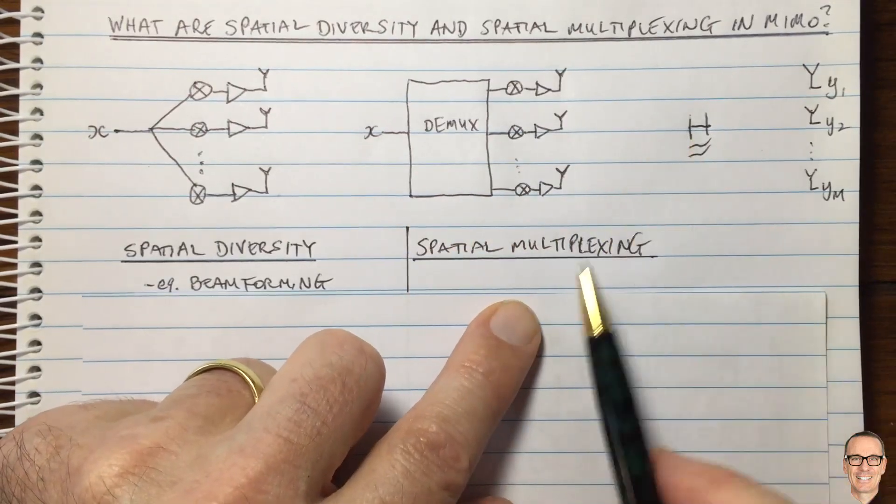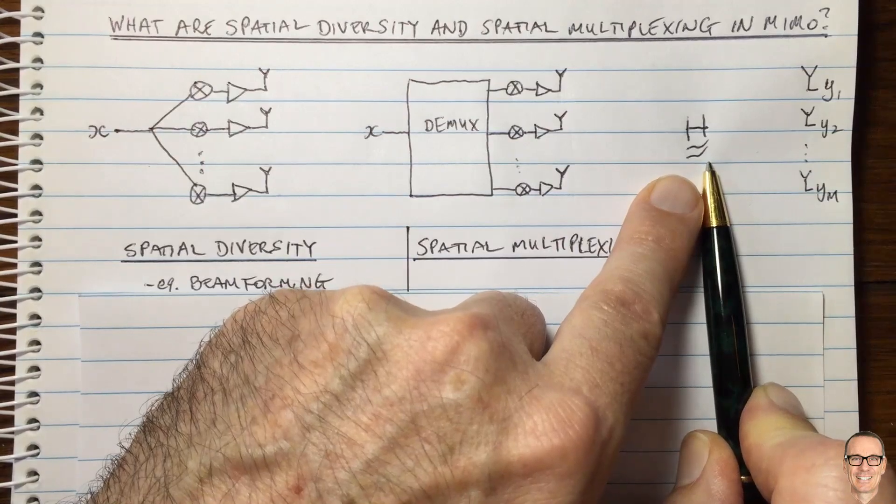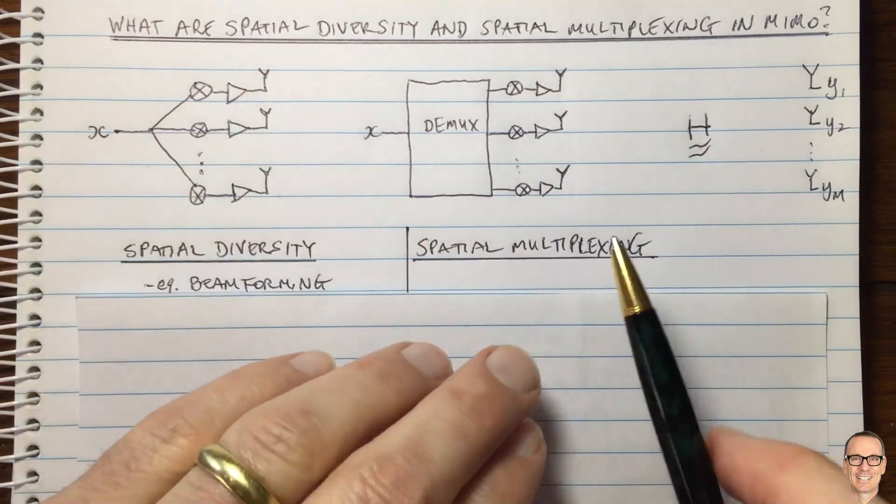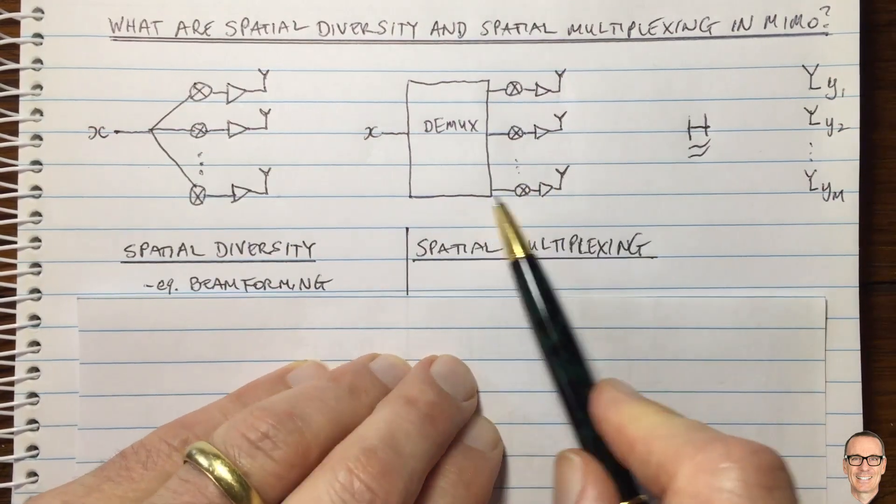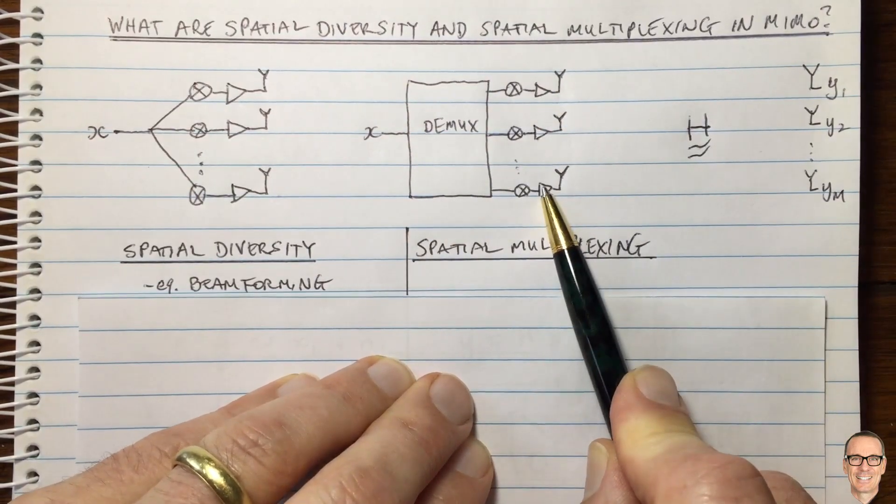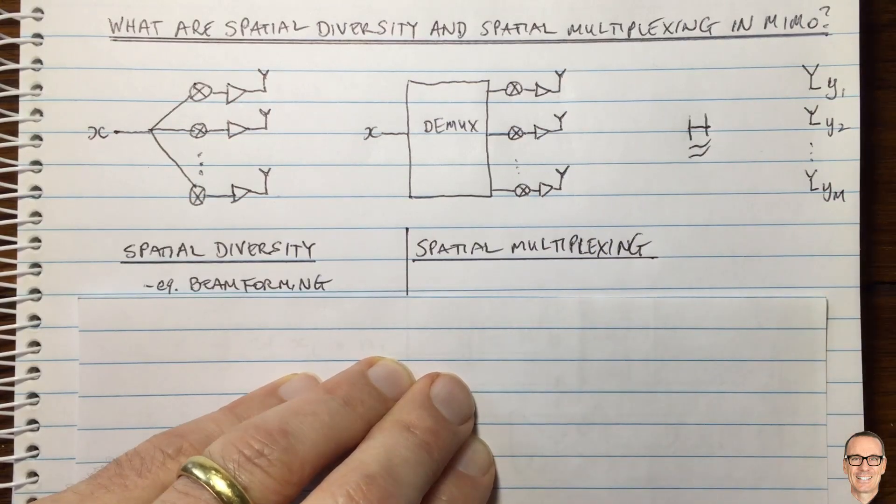And then you'd be right to guess that in the opposite scenario, where there's not one path that dominates, but there are many multiple paths, all reflecting and bouncing off different walls and buildings and trees and all scattering, then you're wanting to have multiplexing, which is the other extreme. So let's look at why you want to do those two things.